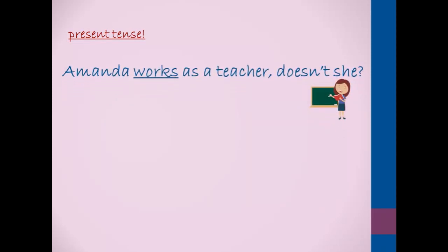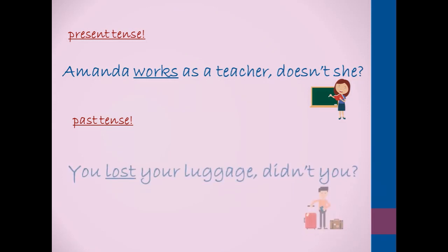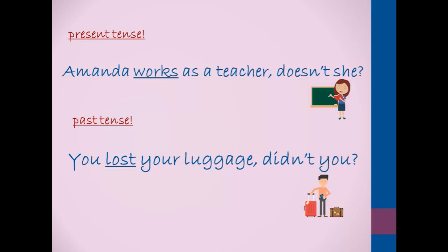Let's go next to tenses and question tags. When the verb of the statement is in the present tense, we use 'do,' 'does,' 'don't,' or 'doesn't' in the question tag. For example, the verb 'works' is in present tense, third person singular: 'Amanda works as a teacher, doesn't she?' When the verb of the statement is in the past simple, we use 'did' or 'didn't': 'You lost your luggage, didn't you?'